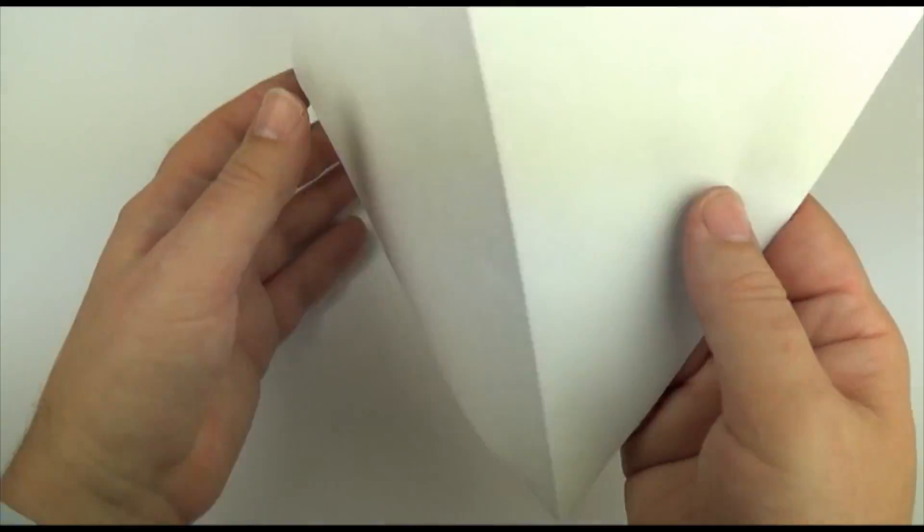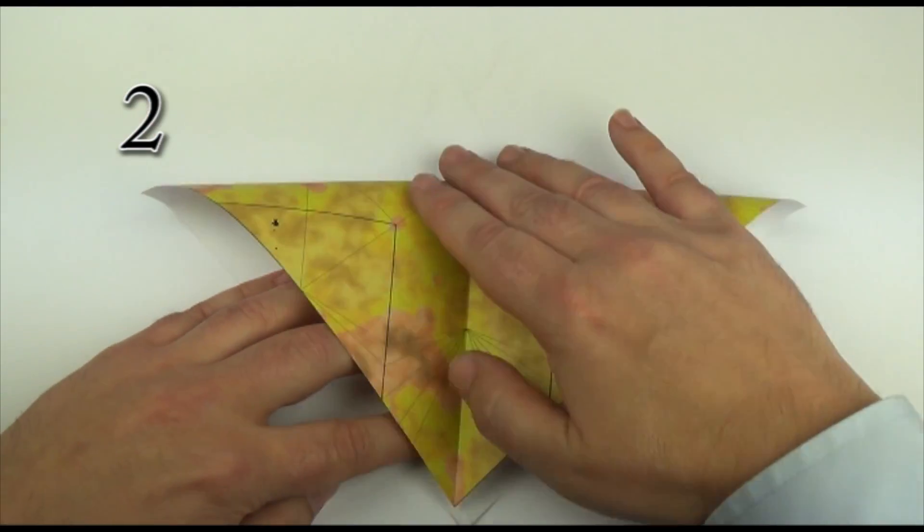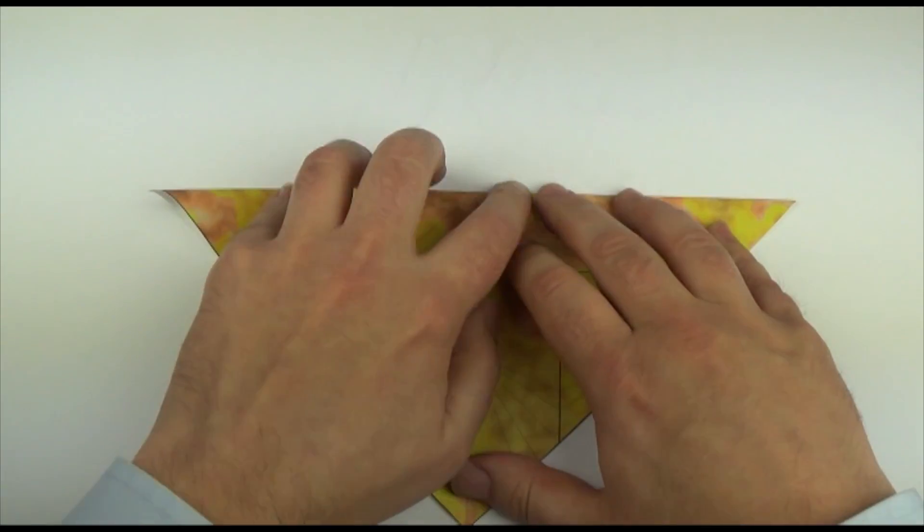Open up, and turn over. Now we're going to fold one corner down to touch the opposite corner. Hold it together, and crease.